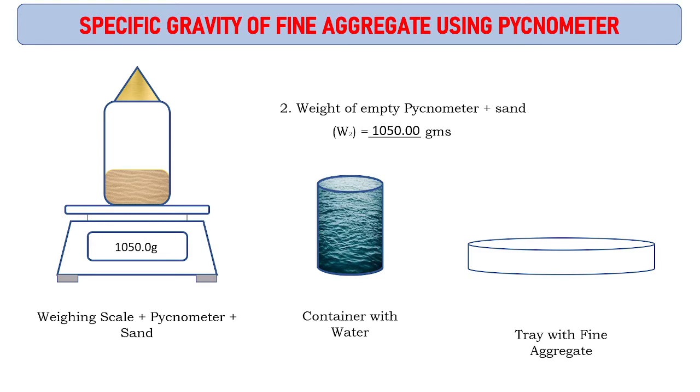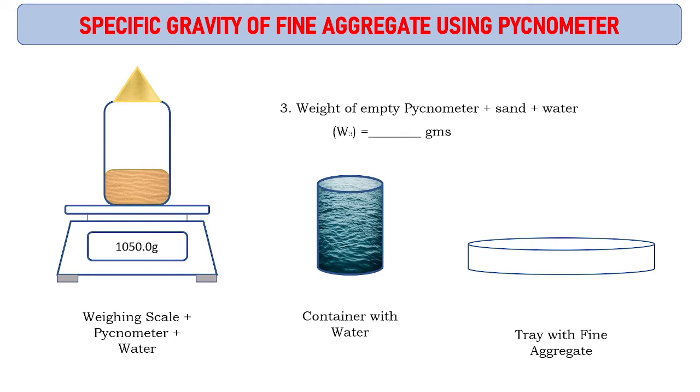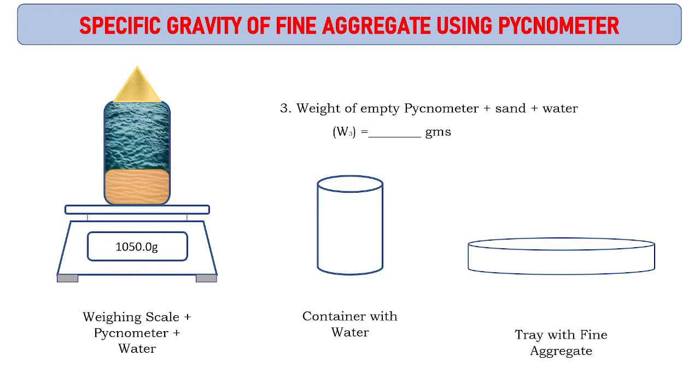Now we are going to add water from the water container to the pycnometer. Third observation: weight of empty pycnometer plus sand plus water. Already we have pycnometer with sand weighing 1050 grams. When we add water, it is totally filled up to the tip of the pycnometer. The weight comes as 1760 grams.